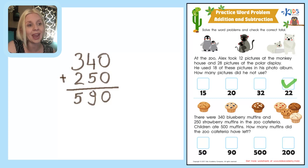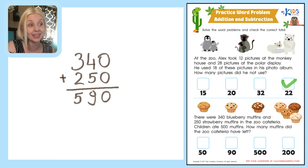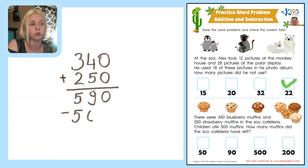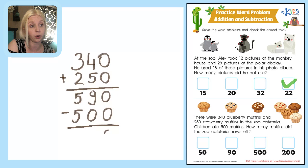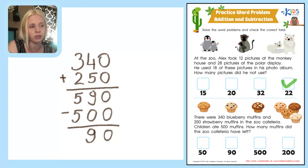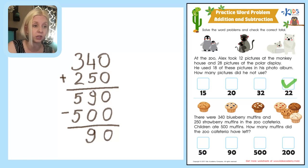Children ate 500 muffins. When they eat them, we take away — it's a subtraction problem. So we subtract 500 from 590. 0 minus 0 is 0. 9 minus 0 is 9. 5 minus 5 is 0, and since it's in the hundreds place we don't need to write it. So our total is 90. That's how many muffins the zoo cafeteria had left after the children ate.